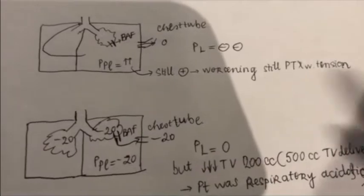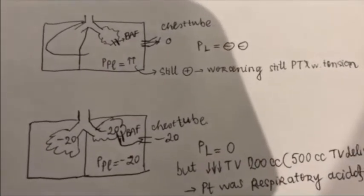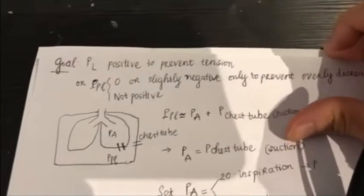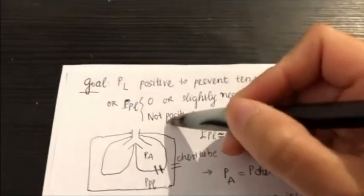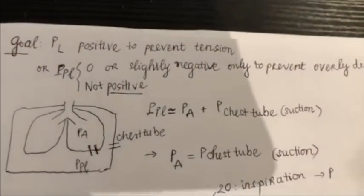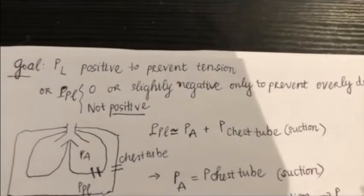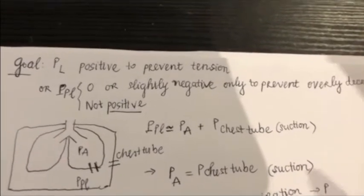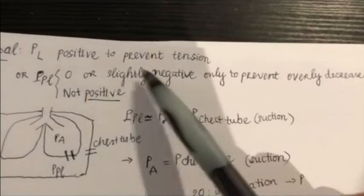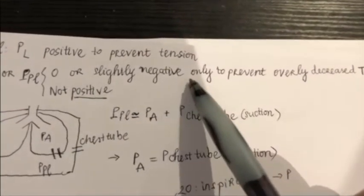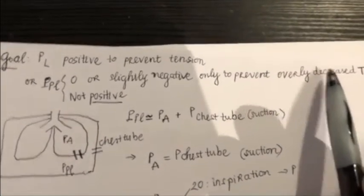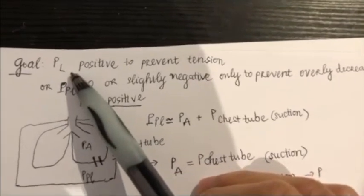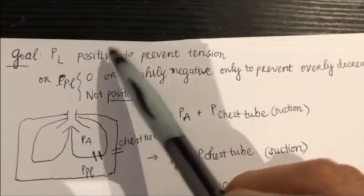So what is the key here? The key here is the pleural pressure. You cannot let the pleural pressure be positive at all, because if it became positive, then the more breath delivered by the ventilator, it will accumulate and will cause tension. So it has to be zero. And when it's negative, it should be only slightly negative, not too much negative to prevent overly decreased tidal volume. And the transpulmonary pressure in a similar fashion to make the lung open, it has to be positive to prevent tension.